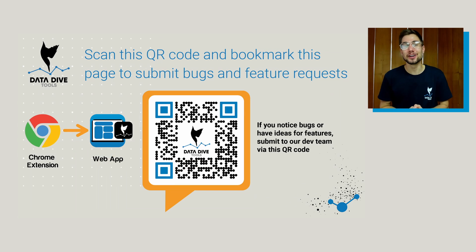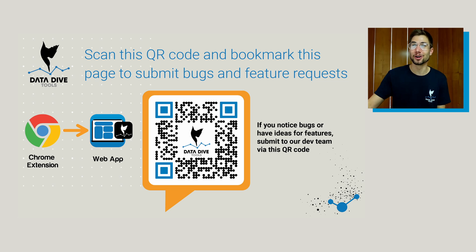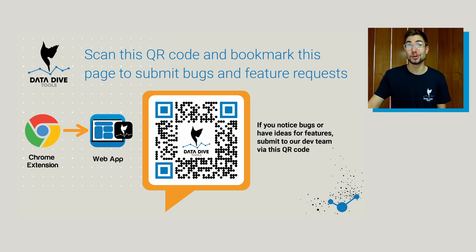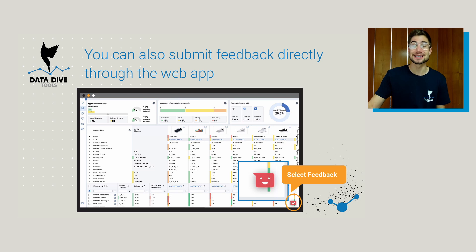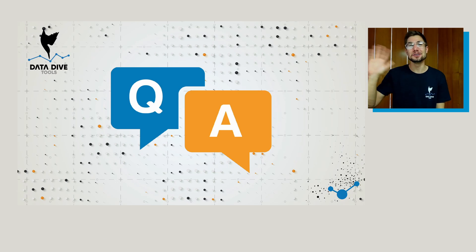I know that was a super long video. Datadive is a very complex tool and these new enterprise features are just currently in beta. If it seems a little confusing, just go through and start playing around with the tool — I promise it's very intuitive. Keep in mind this is really just the starting point. If you're going through these new enterprise features and something doesn't quite work, go and submit a bug request. You can do that by scanning the QR code, or click the feedback button in red at the bottom. If you have any questions about our enterprise features, feel free to let us know in the comments below. Thanks so much for taking the time to watch — we'll see you in the next video.